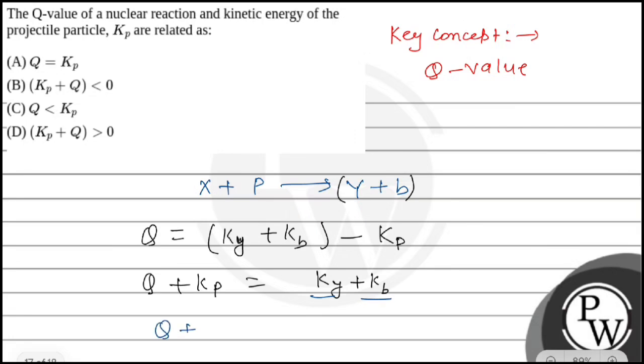So we can write Q plus Kp is greater than zero. Therefore, the answer option D is correct. Hope you understood it well, all the best.